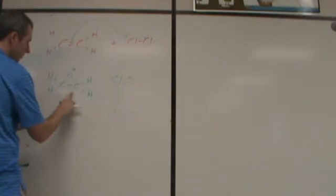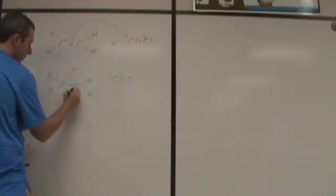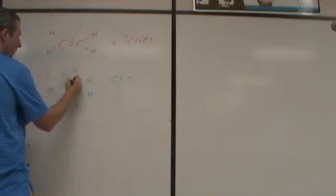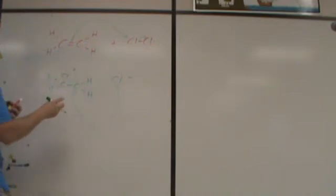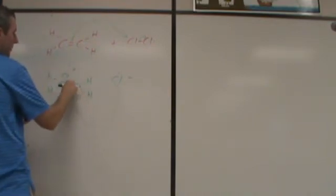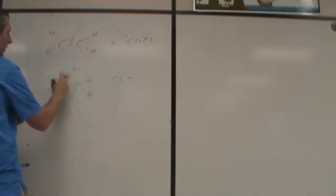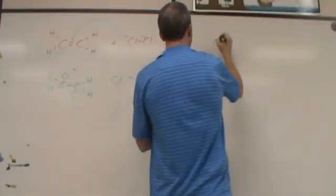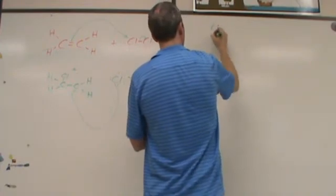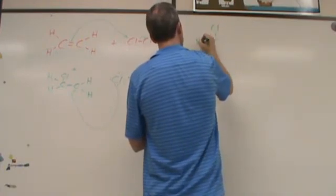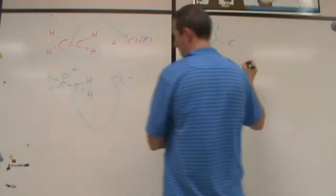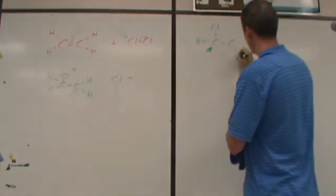So instead what we see is that this chloride ion is going to come into either one of these and that bond is going to lengthen on the one that this is coming into. So let's redraw this and let's say that this chloride ion is going to come in here. What you're going to see happen then is this is going to start to shift where it's closer to here than it is to there. And then as this bond forms, this one will break and I'll end up with a chlorine here and then I will also have a chlorine here.